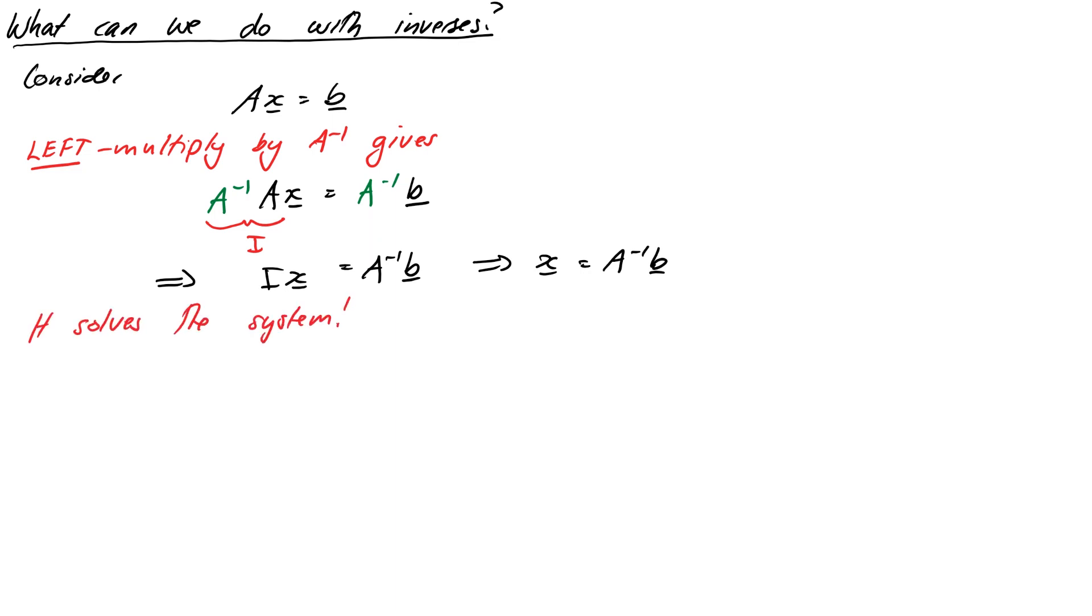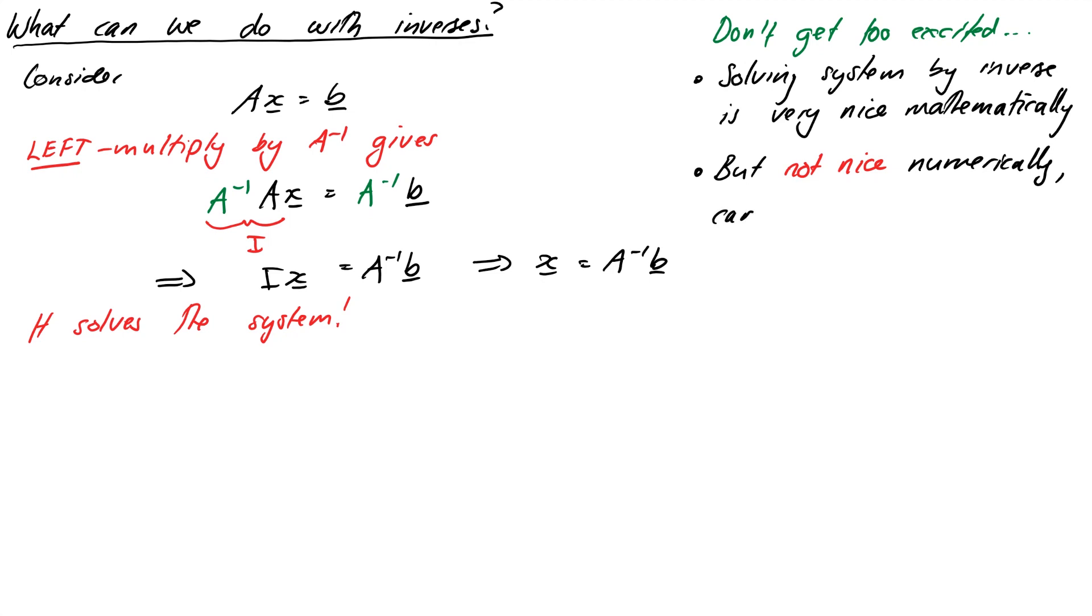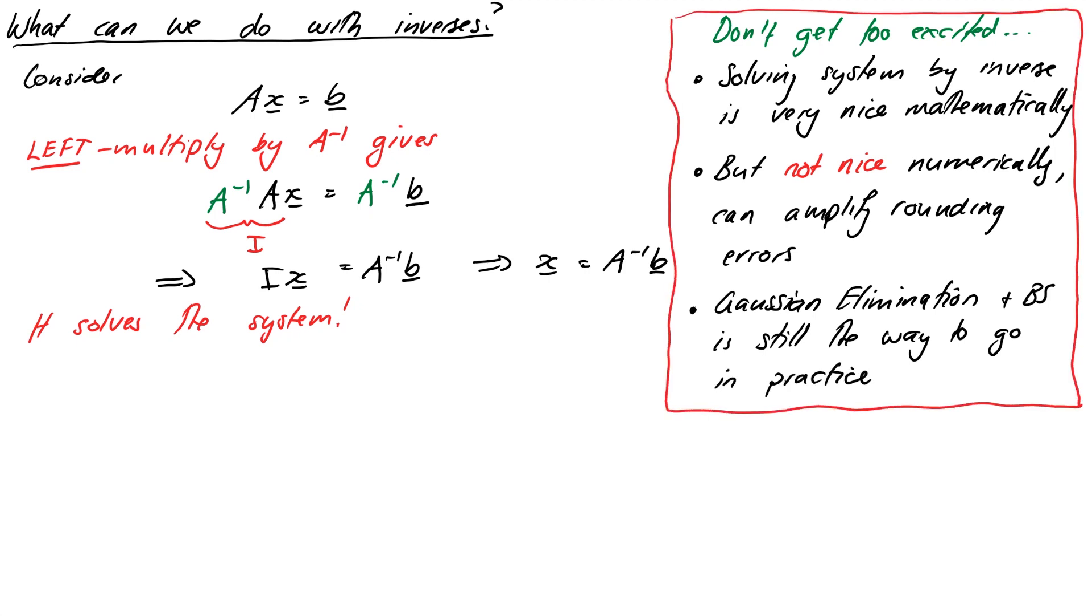Now there's one very important note though before we get too excited and just want to do this all the time to solve systems. This is actually a very nice mathematical construction but practically speaking if we solve systems by calculating the inverse of the matrix then multiplying our right hand side by it, it turns out that this is not a good idea, numerically speaking. Remember whenever we solve a system of equations on a computer we're only representing the numbers to a finite level of accuracy and this method of solving equations can actually amplify rounding errors quite significantly. So practically speaking to solve a system Gaussian elimination and back substitution is still the correct method. However this inverse method is quite conceptually very useful and will be very helpful when it comes to manipulating expressions involving matrices.